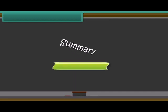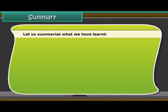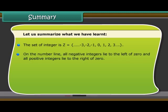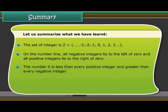Summary. Let us summarize what we have learned. The set of integers is Z, which is equal to, within bracket, minus 3, minus 2, minus 1, 0, 1, 2, 3. On the number line, all negative integers lie to the left of 0 and all positive integers lie to the right of 0. The number 0 is less than every positive integer and greater than every negative integer.